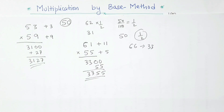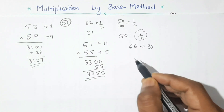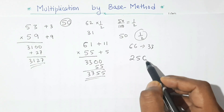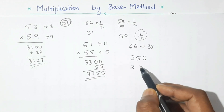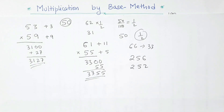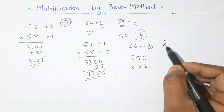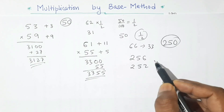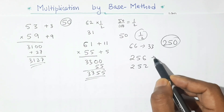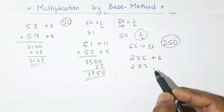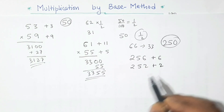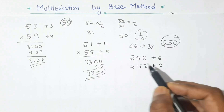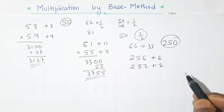Now let us take another number: 256 and 252. Both numbers are closer to 250, so our base is 250. This number is 6 more than 250 (plus 6) and this is 2 more than 250 (plus 2). We add 2 to 256: 256 plus 2 is 258.